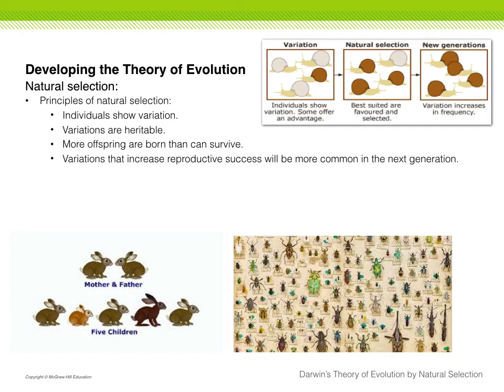There are four principles to the process of natural selection. The first is that individuals show variation — not everybody looks the same. The second principle is that those variations are heritable — they can be passed on to offspring. The third is that more offspring are born than can survive in the environment. And the final one is that variation increases reproductive success, and because it does, those variations are going to be more common in the next generation.